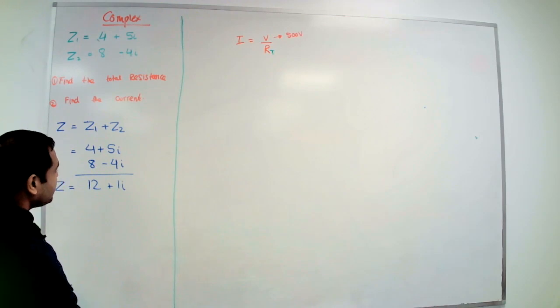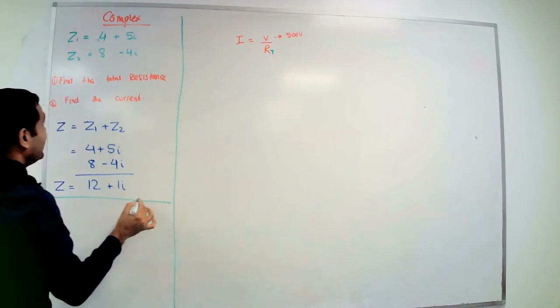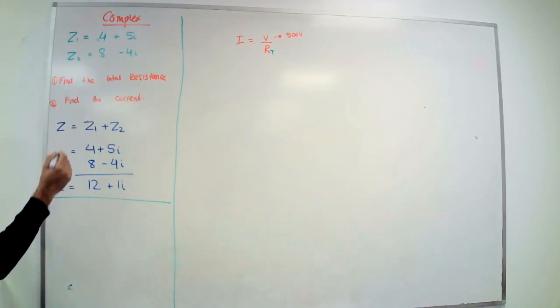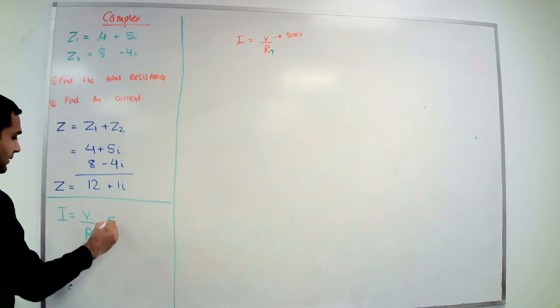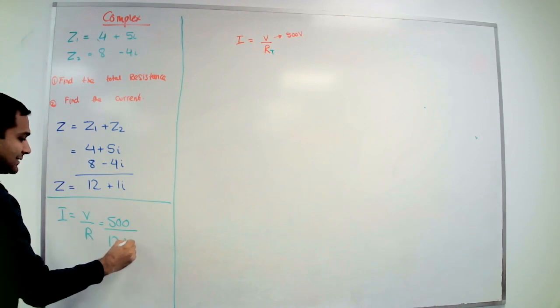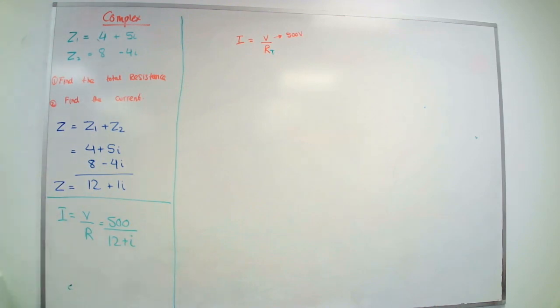I find the total resistance, this is actually Z, the total resistance. I got that value, now I need to put that in this formula: I equals V over R. What's the V? V is the voltage given, and that is 12 plus i.